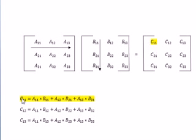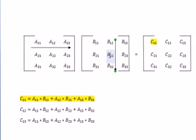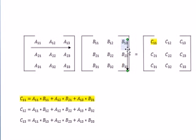Here, C11 has an expression like this: A11 multiplied with B11, plus A12 multiplied with B21, plus A13 multiplied with B31. Similarly, this is the expression for C12, shown by these two arrows. The expression for C12 goes the same way as C11. Similarly, the expression for C13 is like this way, going by these two arrows, multiplying the respective elements and adding them.